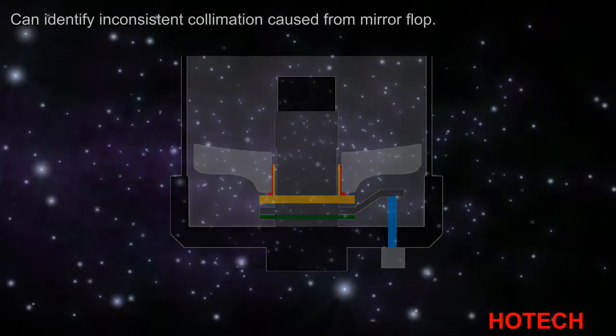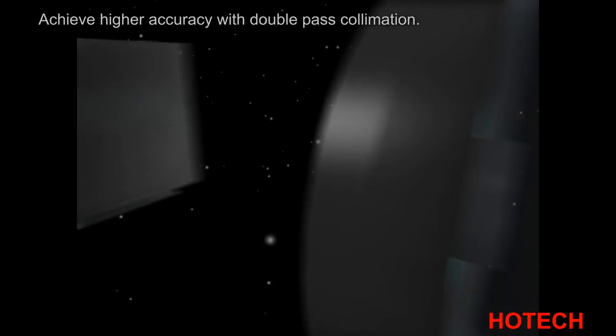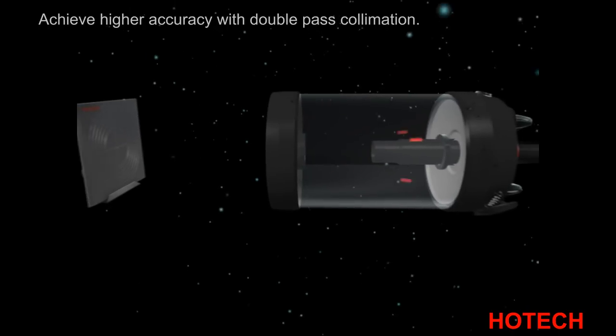The reflector mirror installed at the focal point reflects the laser beam back through the telescope, doubling the collimation accuracy.